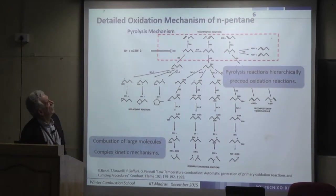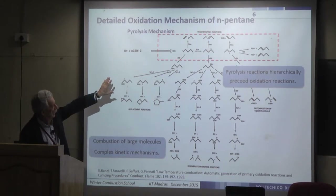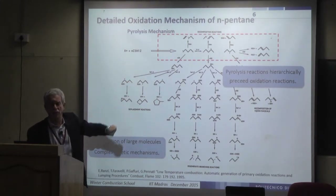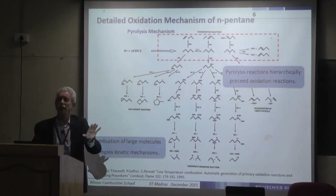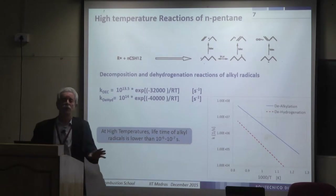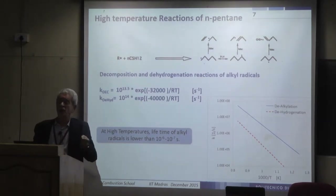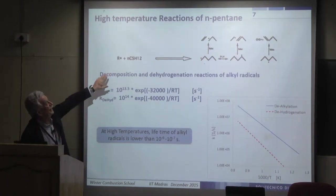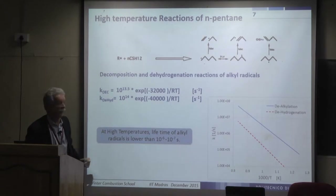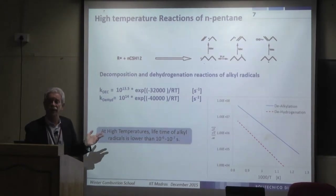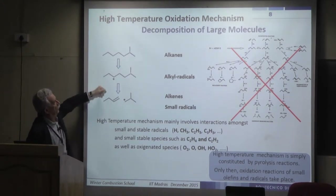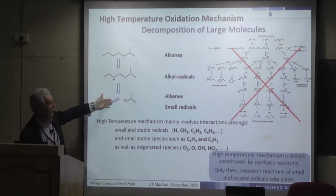Focusing on the oxidation mechanism of pentane: at high temperature, pyrolysis reactions precede oxidation reactions. Defining a detailed kinetic mechanism for high temperature conditions means first defining a detailed mechanism for pyrolysis, since large alkyl radicals decompose very rapidly — with a radical lifetime of 10⁻⁶ to 10⁻⁷ seconds. The high temperature mechanism is: form alkyl radicals, decompose the alkyl radicals.